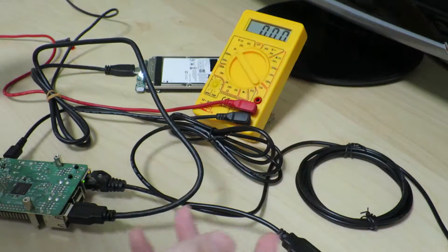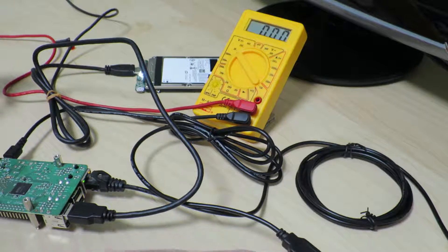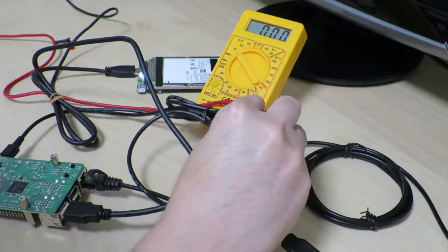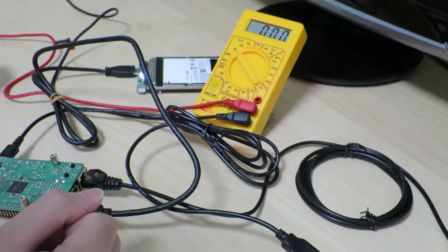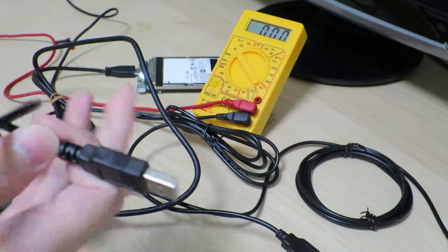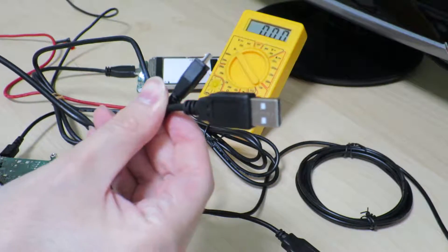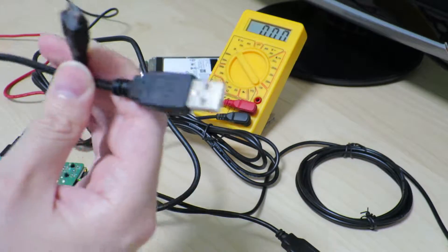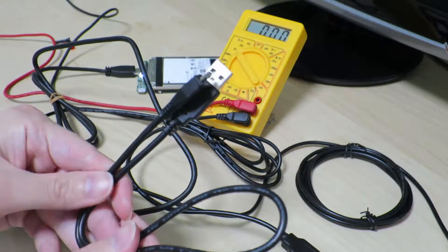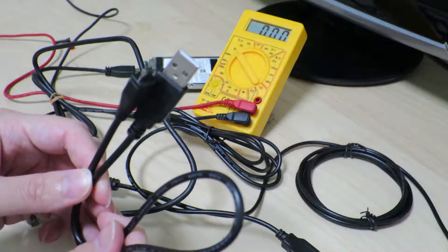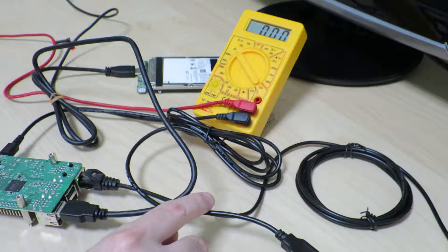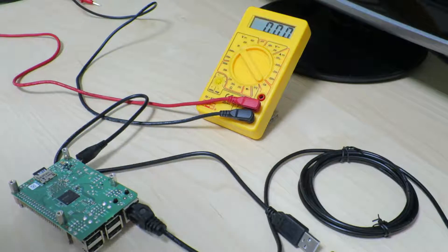All right, so now that we know that at least with this setup where we have the power brick, which says that it supports 2.4 amps and this power cable, unfortunately, we're not able to start up the hard drive. Now, I have another USB cable, which claims that it can deliver 2 amps. This is much shorter than the USB cable that I'm using right now. It's 50 centimeters. That's about 20 inches. So I'm going to go ahead and swap the power out once I turned the Raspberry Pi off. So we're back.